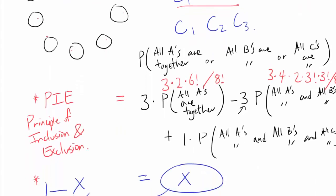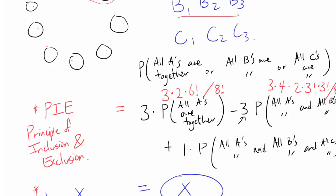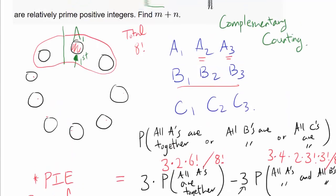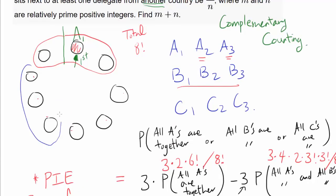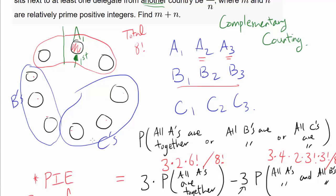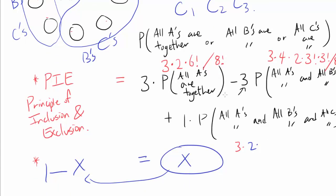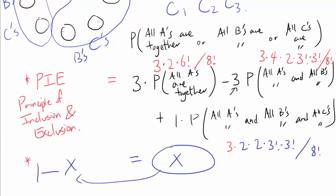For all A's, all B's, and all C's together: we pick the spot for the A group — 3 ways. After that, 2 consecutive blocks of 3 remain, so we can assign B to one side and C to the other in 2 ways. We then arrange within A, within B, and within C — each in 3 factorial ways — and divide by 8 factorial. So the expression is 3 × 2 × (3!)³ divided by 8!.